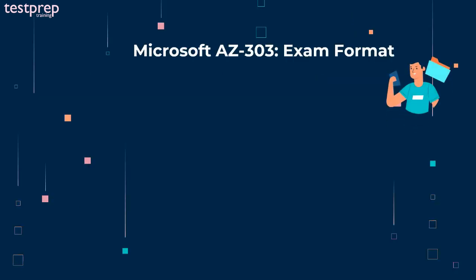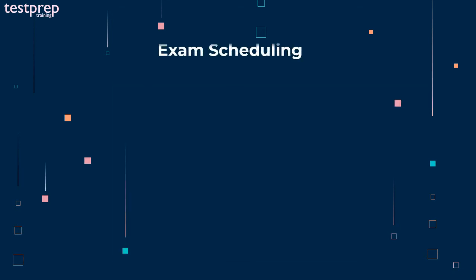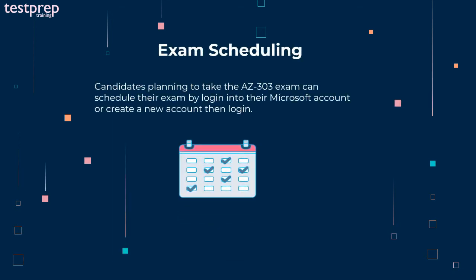Now, we will talk about exam format. Details of the exam are as follows: exam code is AZ-303, number of questions ranges from 40 to 50, exam type is beta, it costs $165, the language used is English. Candidates planning to take the AZ-303 exam can schedule their exam by logging into their Microsoft account or creating a new account then logging in.